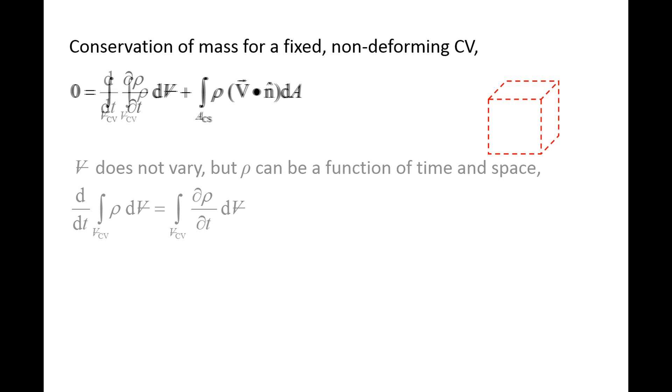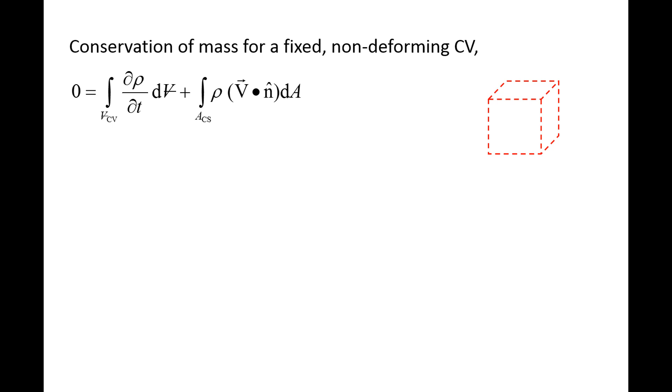The second term in the conservation of mass equation is rho times the dot product of the velocity vector and normal vector times dA, integrated over the control surface.